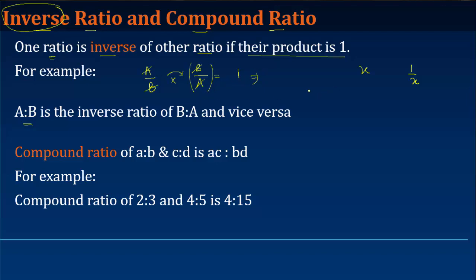Similarly, let's take one more example. If you have a ratio of 3 is to 6, what is the inverse of this ratio? It's just obtained by making the denominator the numerator and numerator the denominator: 6 upon 3.